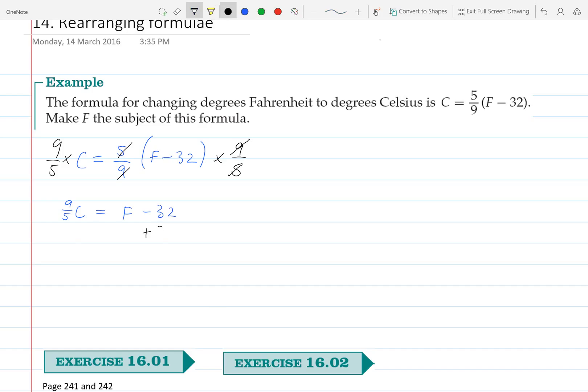We'll add 32 to both sides. And then we can say that F is equal to 9 fifths of the Celsius temperature plus 32 degrees.